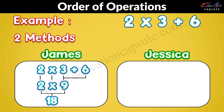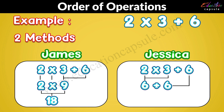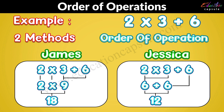Jessica did multiplication first: 2 times 3 which is 6, then 6 add 6 is 12. So to avoid getting different answers of a calculation, we need an order of operations.